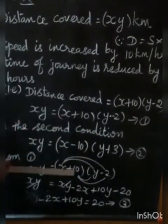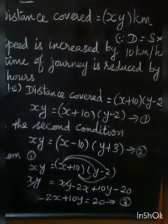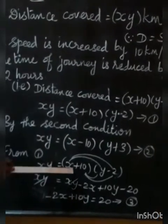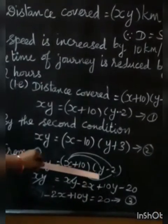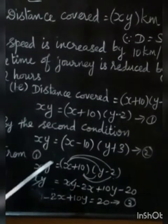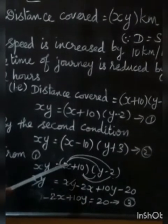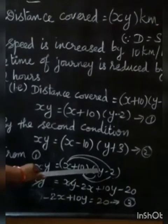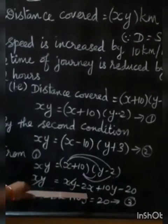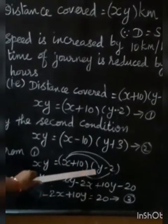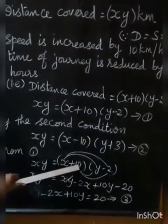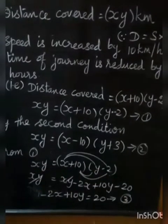Expanding the first equation: XY equals X plus 10 into Y minus 2. Left-hand side is XY, right-hand side expands to XY minus 2X plus 10Y minus 20. XY cancels on both sides, remaining: minus 2X plus 10Y minus 20 equals 0.